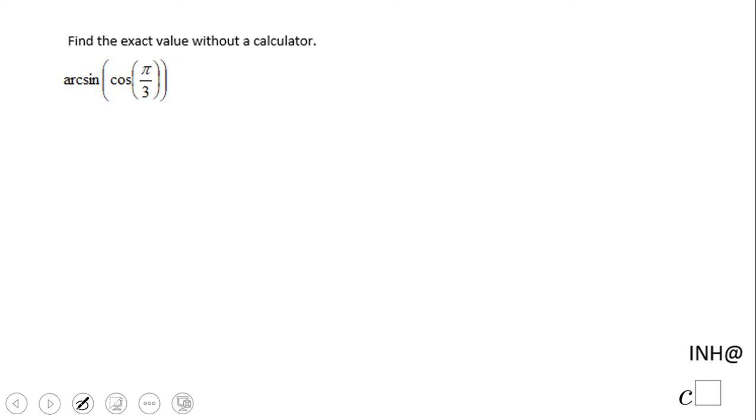Welcome back. Here to help at C-square, in this example we're going to evaluate the composition of the trigonometric functions arc sine and cosine. Whenever you have something like that, you start with the inside function.